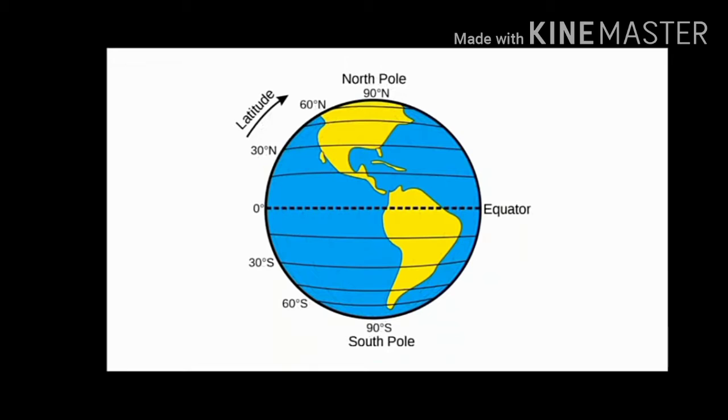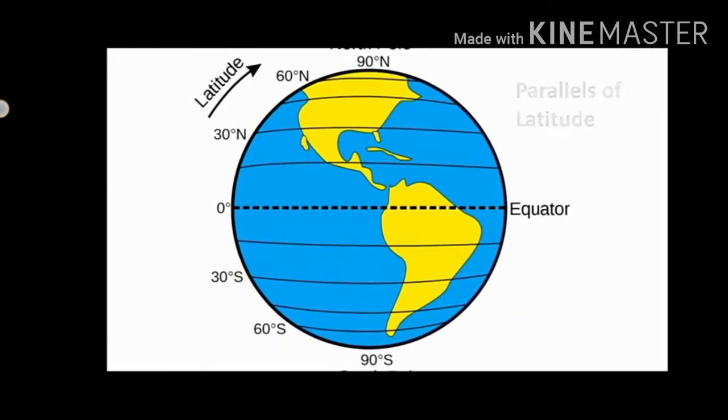Parallels of latitudes: Many circular lines can be seen on the globe. The full circles which run from east to west and are parallel to one another are called parallels of latitudes. Equator is the largest parallel.